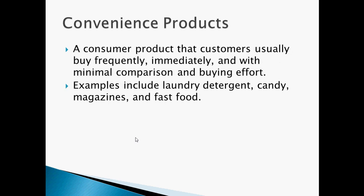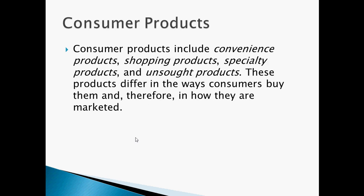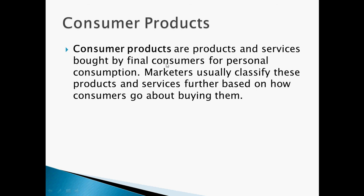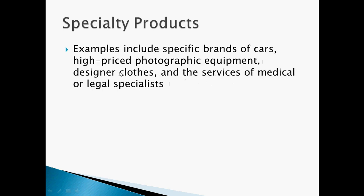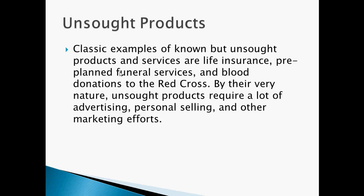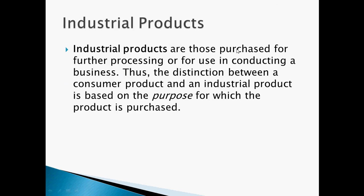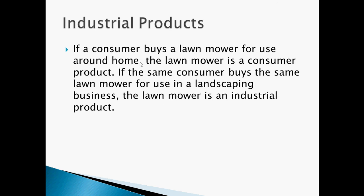Consumer products and services are bought by final consumers for personal consumption, while industrial products are those bought for further processing or use in conducting a business. For example, if a consumer buys a lawnmower for use around the home, it is a consumer product. If the same consumer buys the same lawnmower for use in a landscaping business, it is an industrial product.